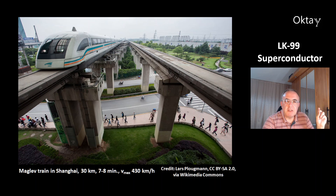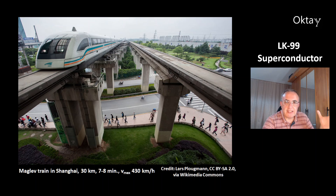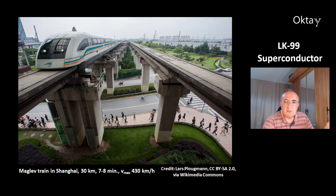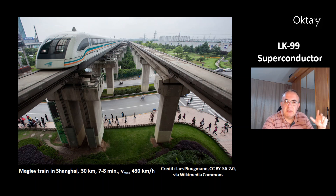This is a picture of the Maglev train in Shanghai — a very impressive train. It covers a 30-kilometer route in seven to eight minutes and can reach a maximum speed of 430 kilometers per hour. That's another application for superconducting materials.